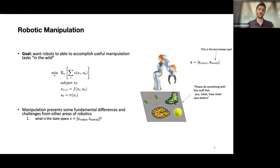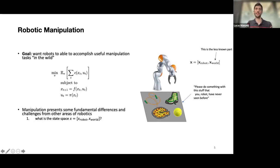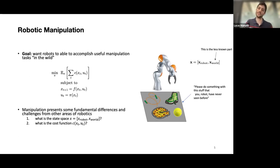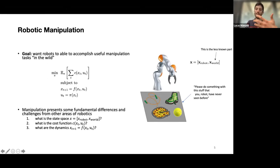I like to reframe things in terms of a standard optimal control or trajectory optimization problem. Our task is to find a policy π that minimizes some cost, subject to dynamic constraints. Manipulation presents fundamental challenges compared to other areas of robotics. First is the state space — the challenge is thinking about the state of the world, not just the state of the robot. For a robot arm it's easy to read encoders, but understanding the state of a rope or a shoe is hard. Second, the cost function isn't obvious. Third, you're not handed the dynamics function — what happens when you interact with a deformable object is quite challenging.